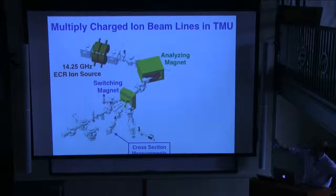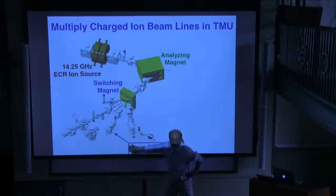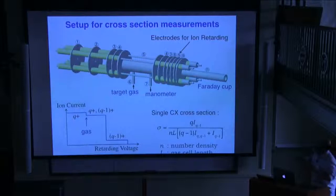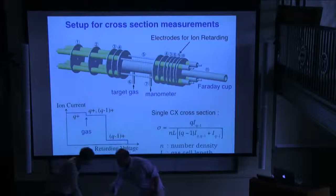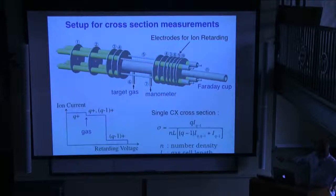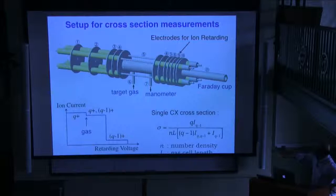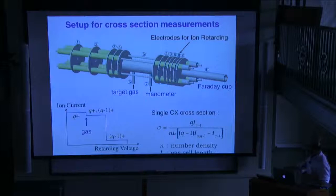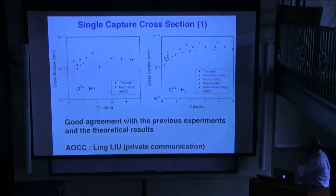After charge state selection, we have two beam lines. One is for the cross-section measurement. In our chamber, we have a collimator and a gas cell. We input the target gas, and we can analyze the charge state after passing through the gas cell using a very simple ion-retarding method. If we change the voltage, the current measured by a Faraday cup has a stepped structure, meaning we can select each charge state. Using a very simple equation, we can calculate the single charge exchange cross-section.